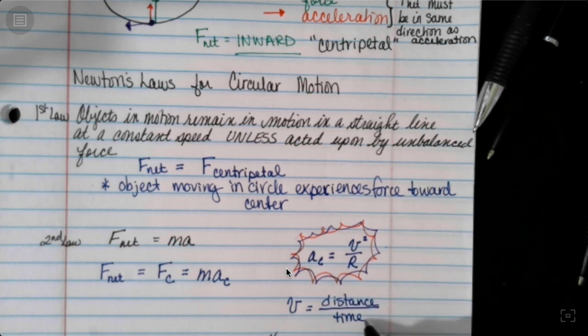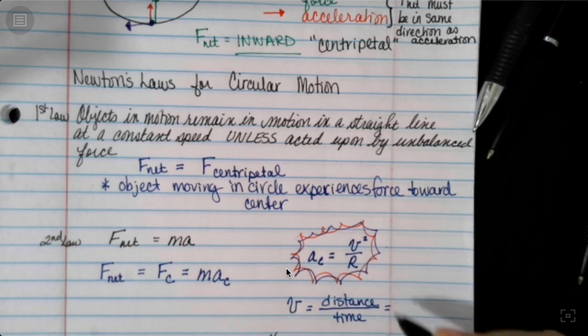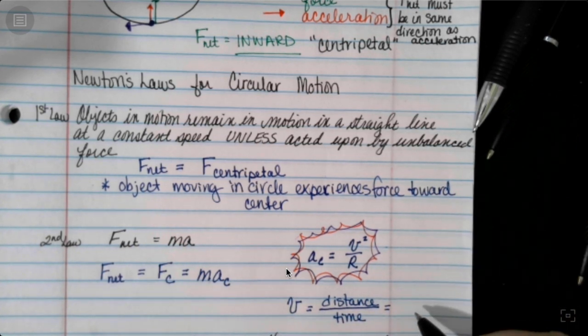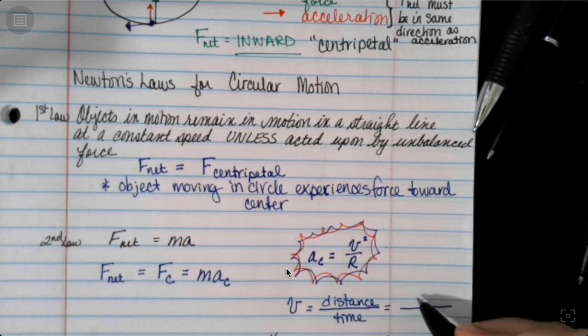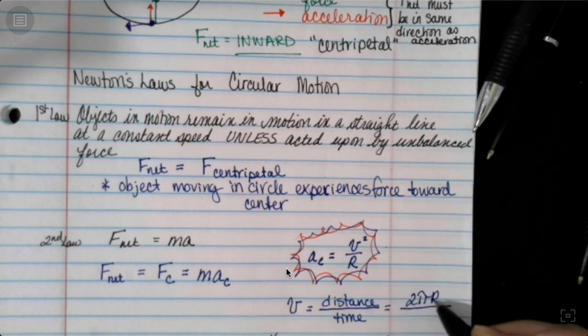Now, if we're talking distance, what does that mean? Well, what's the distance of a circle? Correct. It is the circumference, and the circumference is simply 2 pi r.